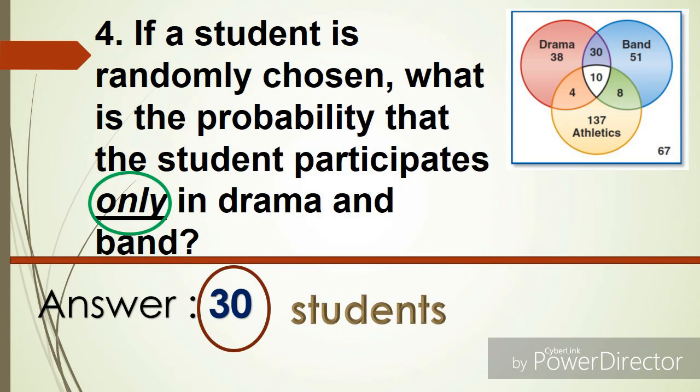Number 4. If a student is randomly chosen, what is the probability that the student participates only in drama and band? The answer here is 30 students.